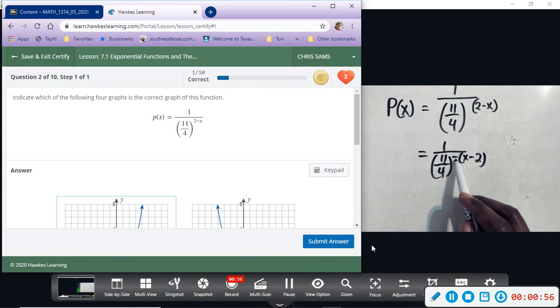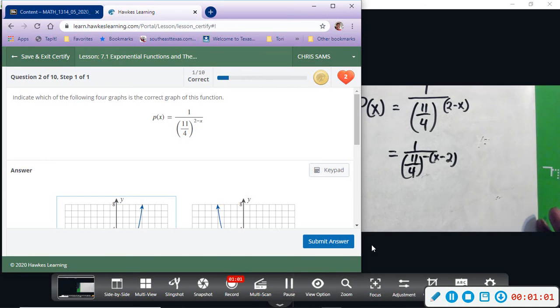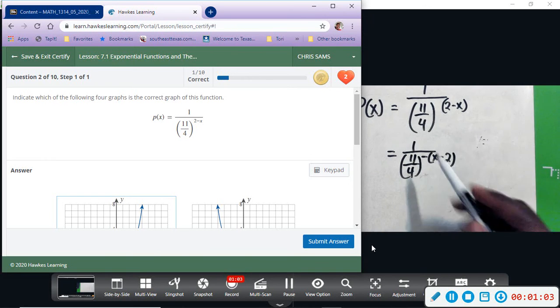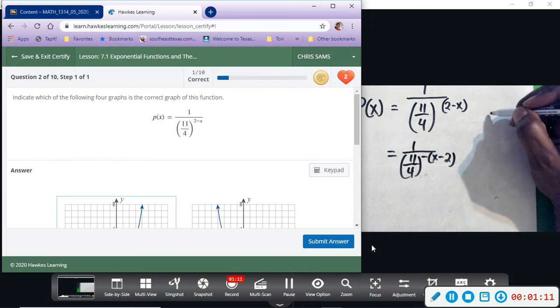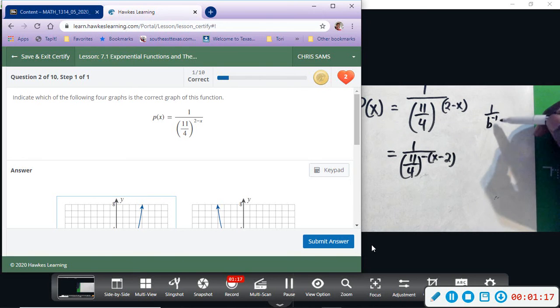But we have a negative exponent. So if we go back to properties of exponents that we've seen before, whenever you have a negative exponent, you're going to move that term in the opposite location. So just recall: if we had like one over b to the negative one, this b would move up to become positive exponent, so now it's like b to the positive one.